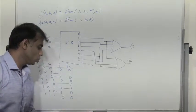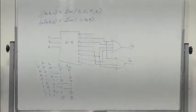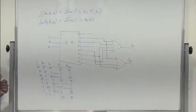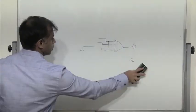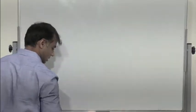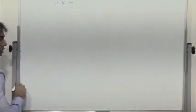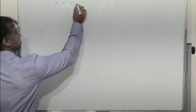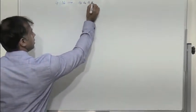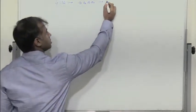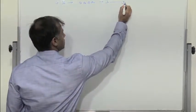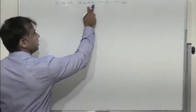Next, let's try to use 2-to-4 line decoders to obtain a 4-to-16 line decoder. How do I configure a 4-to-16 line decoder using 2-to-4 line decoders? We have inputs A3, A2, A1, A0 and 16 outputs starting from Y0 to Y15. A3 is the MSB and A0 is the LSB.